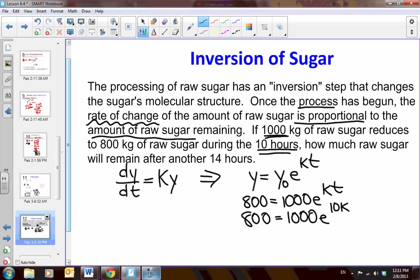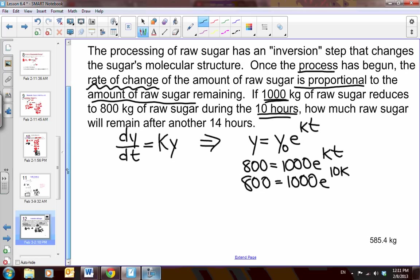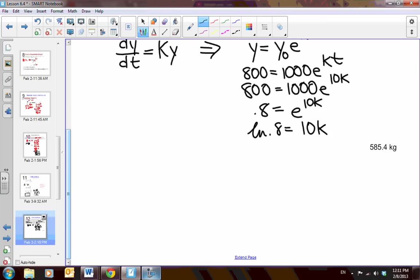So, let's use our Algebra 2 skills and solve. So, I divide by 1,000, and I get 0.8 equals E to the 10k. I take the natural log of both sides, and I get natural log of 0.8 is 10k, and then I divide by 10. So, now I have the natural log of 0.8 divided by 10 is equal to k.